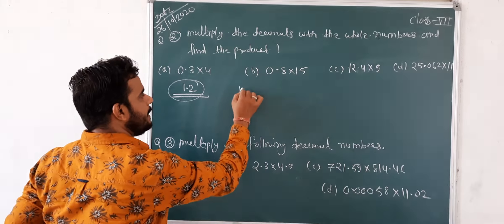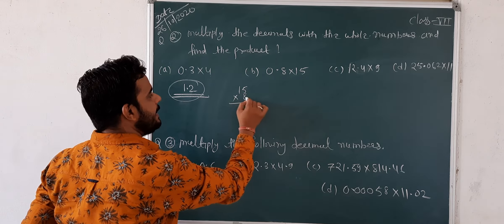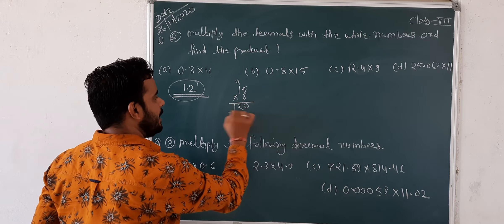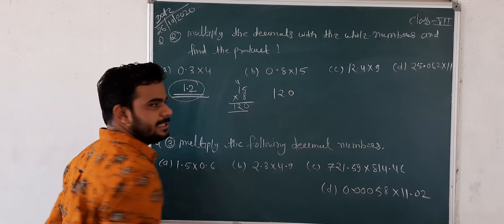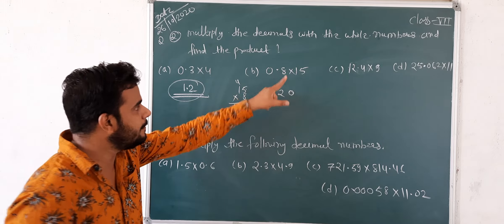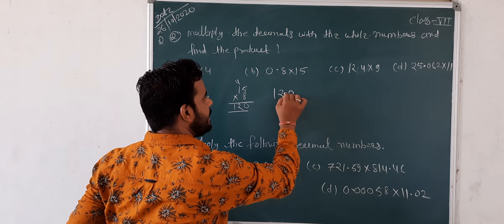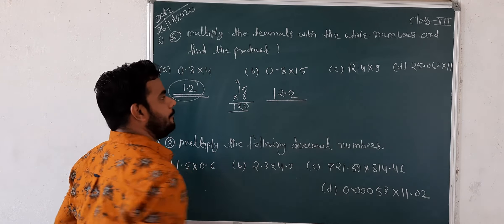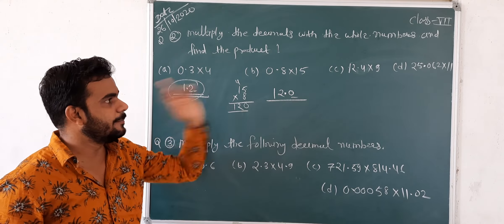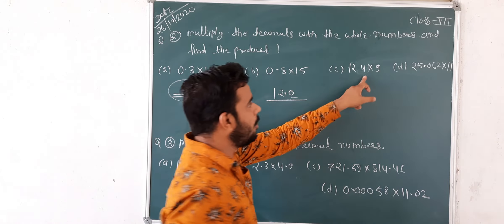Just forget the point, just forget the decimal. 4 x 3.4. 4 x 3 is 12, right? 4 x 4 is 16, carry 1. 4 x 3 is 12, plus 1 equals 13. If you have a point in one place, you will leave one place. Point ke baad ek digit hai, ek jagah chhod ke point hai. This is your answer: 13.6.